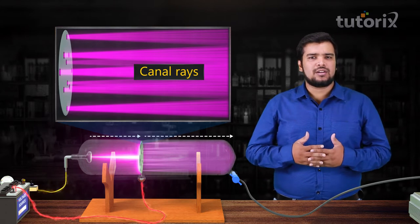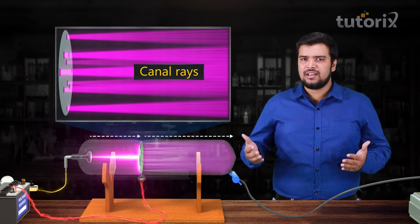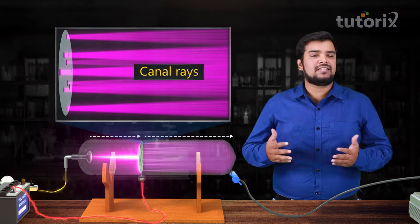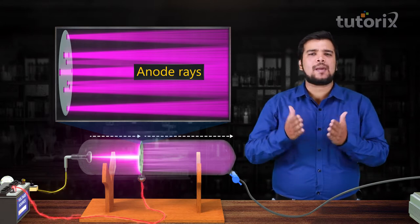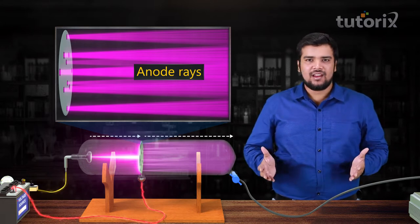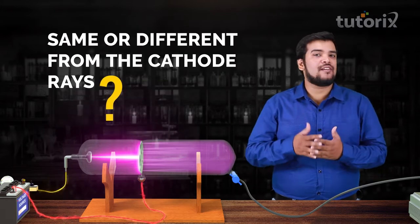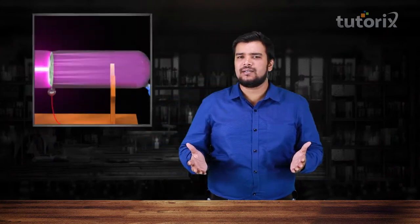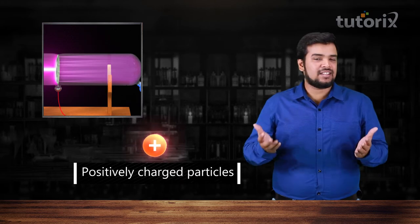And many scientists who named cathode rays because they were coming from the cathode, similarly they named these rays as anode rays. So now that we have found these new type of rays, we need to find out whether their properties are the same or different from the cathode rays. Even though scientists had an idea that these rays are made of positively charged particles, they still had to verify that.